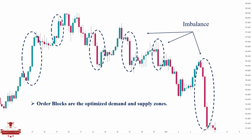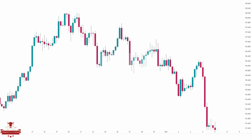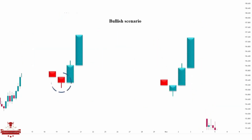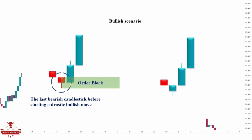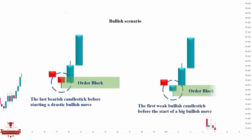Let me show you how we identify the order blocks. In the bullish scenario, the last bearish candlestick before the start of a heavy bullish move is identified as the order block zone, or the first weak bullish candlestick before the big move. The same concept applies to the bearish scenario.